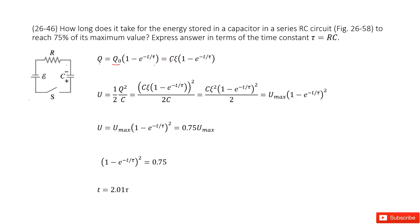And this we can write as C epsilon. C is capacitance. Epsilon is the voltage for this battery.